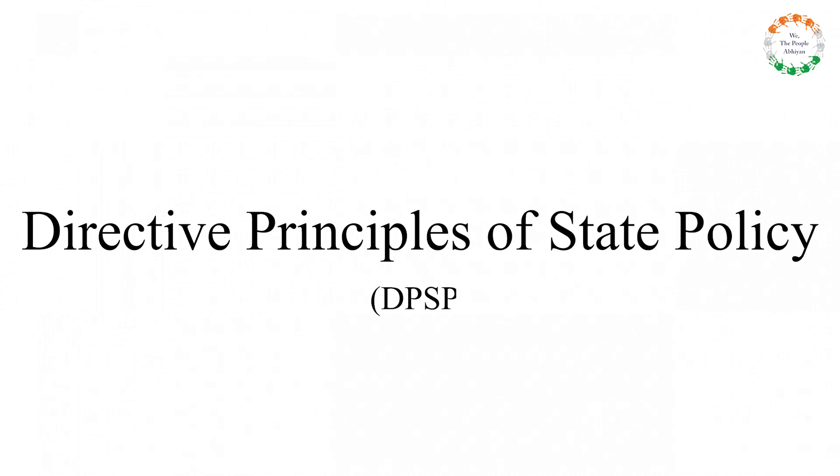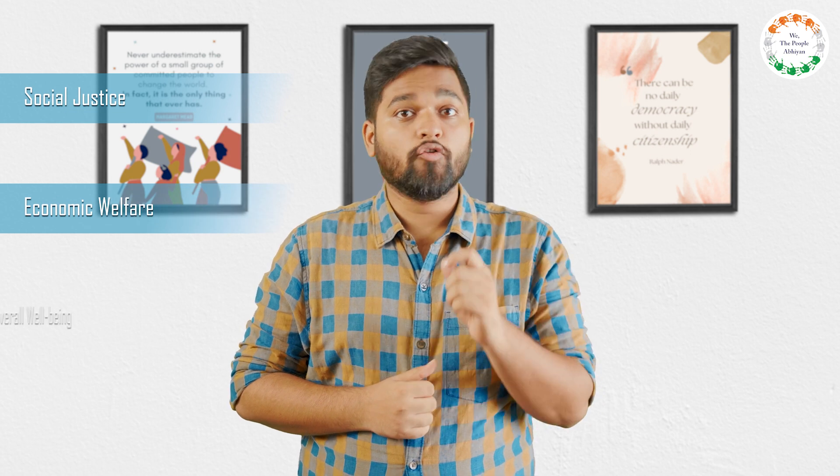Before we dive deep into what UCC means, let us understand what the Directive Principles of State Policies are. As the name suggests, they are like a guide for the state for promoting social justice, economic welfare, and overall well-being of the people. They are different from fundamental rights — the Directive Principles are not enforceable and binding, but they serve as political directives for the government in achieving an ideal society. Many laws and policies are based on DPSP. For example, Equal Pay for Equal Work forms the basis of the Equal Wages Act; Organization of Village Panchayat forms the Panchayati Raj Act; and Free Legal Aid forms the basis of the Legal Services Authority Act.